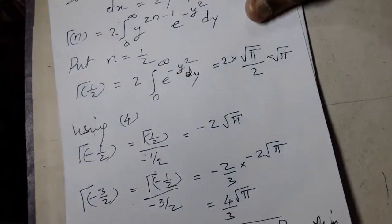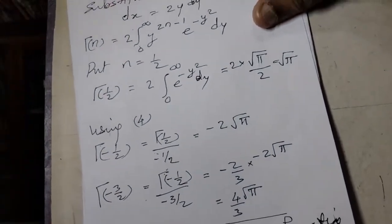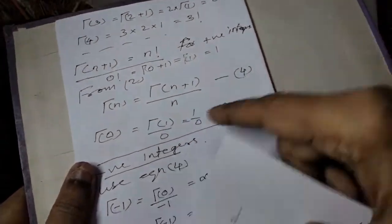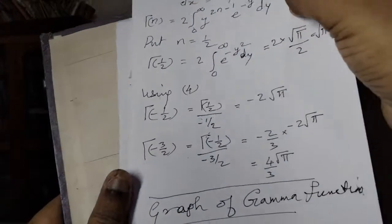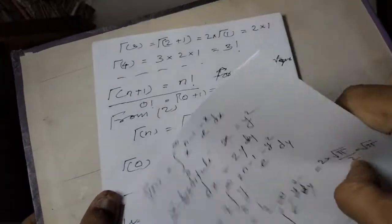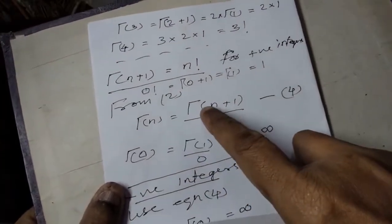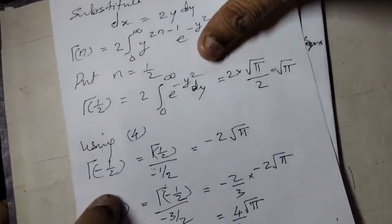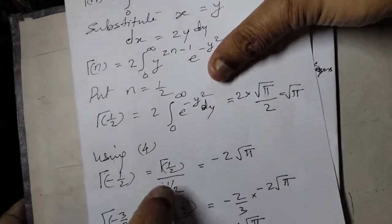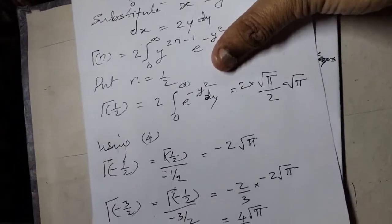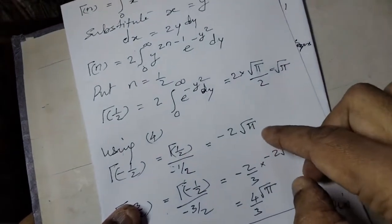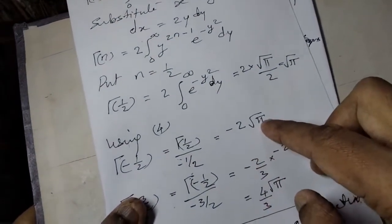Using the recursion formula for gamma(minus 1/2): gamma(minus 1/2 + 1) divided by minus 1/2, where minus 1/2 plus 1 is 1/2. So gamma(minus 1/2) equals gamma(1/2) divided by minus 1/2 = minus 2 times gamma(1/2) = minus 2 root(pi).